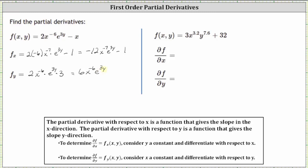Our next function is f(x, y) equals 3x^(3.2) * y^(7.6) plus 32. To find the partial of f with respect to x, we treat y as a constant and differentiate with respect to x. The derivative of 3x^(3.2) * y^(7.6) with respect to x is 3, times the exponent 3.2, times x to the power of 3.2 minus one, which is 2.2, and because we're treating y as a constant we still have times y^(7.6). Then plus the derivative of 32 with respect to x, which is zero.